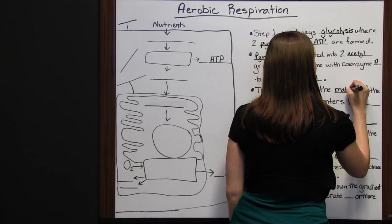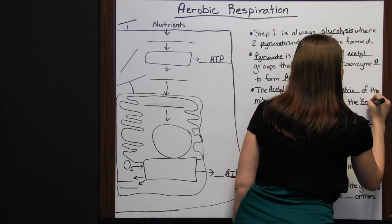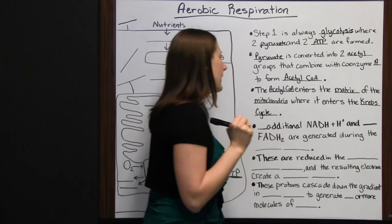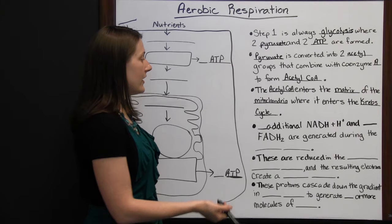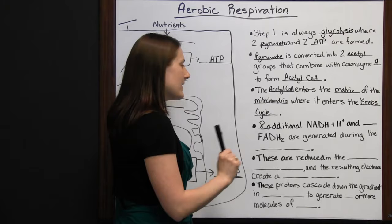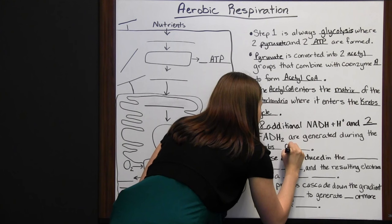The acetyl CoA enters the matrix of the mitochondria, where it enters the Krebs cycle, also called the citric acid cycle. During the Krebs cycle, eight additional hydrogen-rich NADH molecules and two additional FADH molecules are generated.